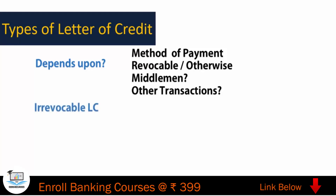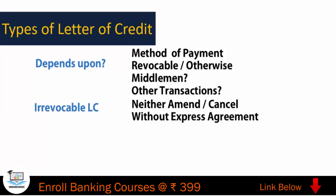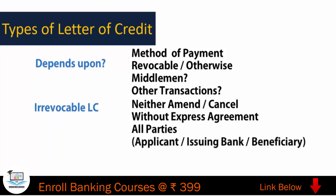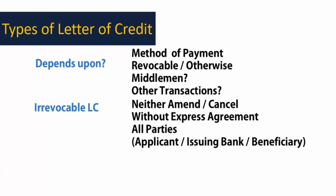The basic classification we can have is number one: irrevocable LC. It does not mean we are going to have a revocable LC — that concept was removed way back in 2007. It means now all LCs that are opened are irrevocable in nature. You can neither amend nor cancel the LC without the express agreement of all parties to the LC — that is the applicant, issuing bank, and beneficiary. All three minimum should agree.